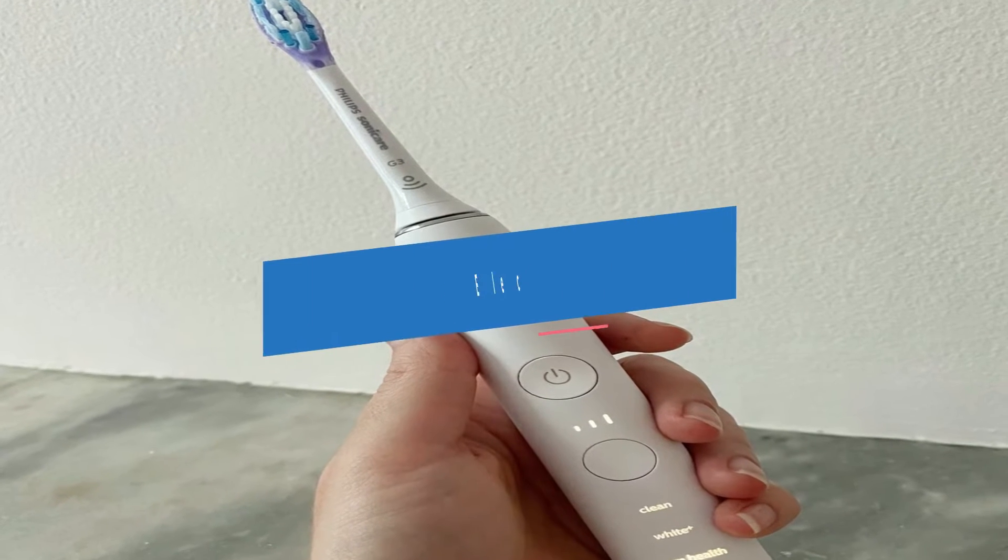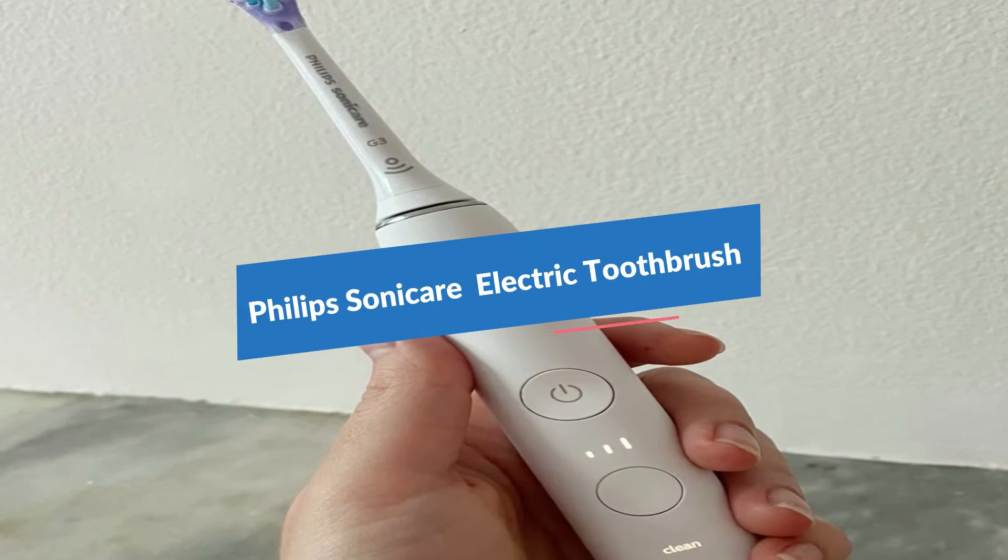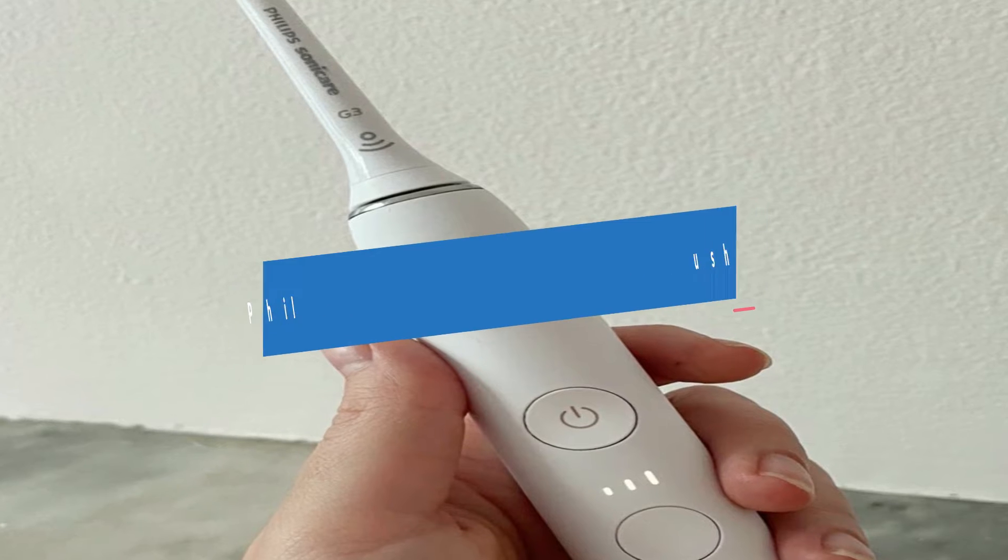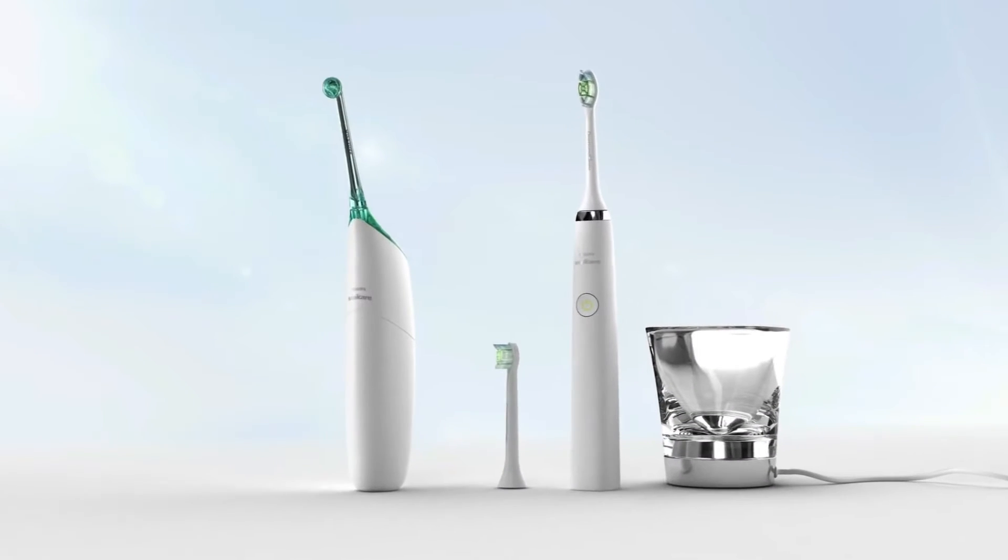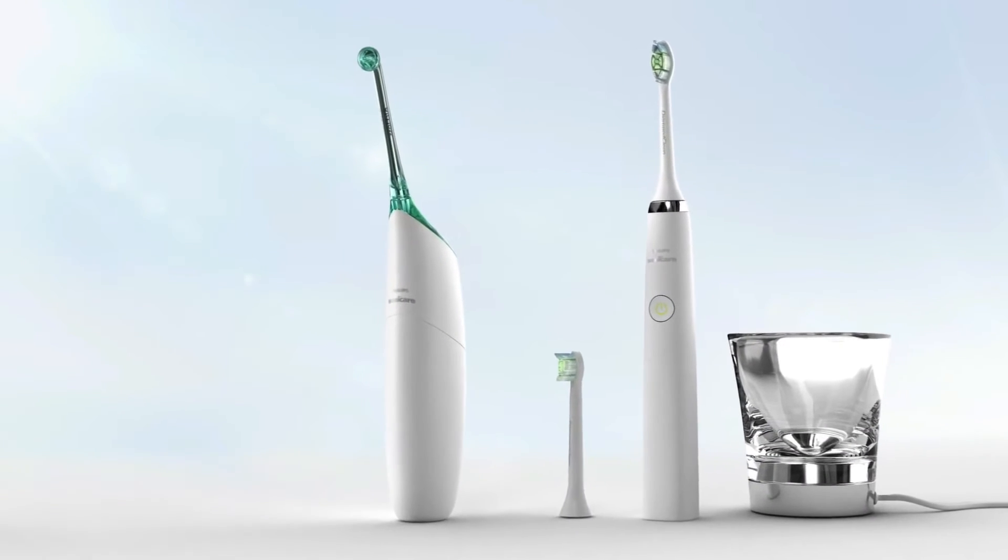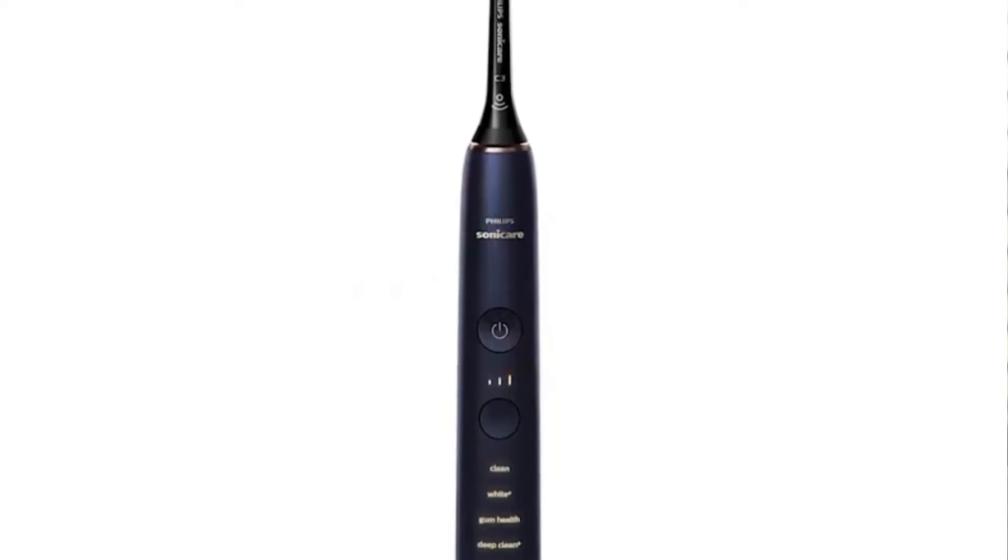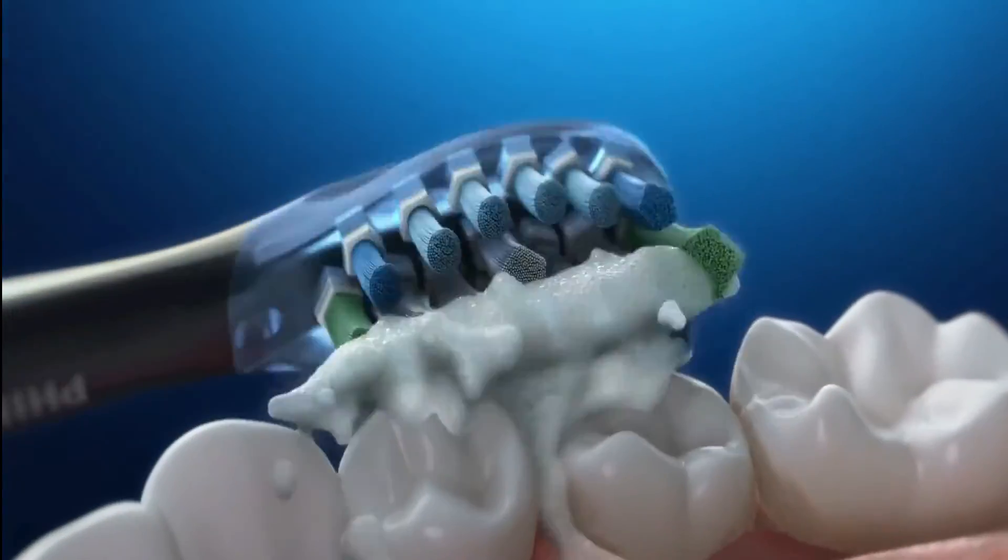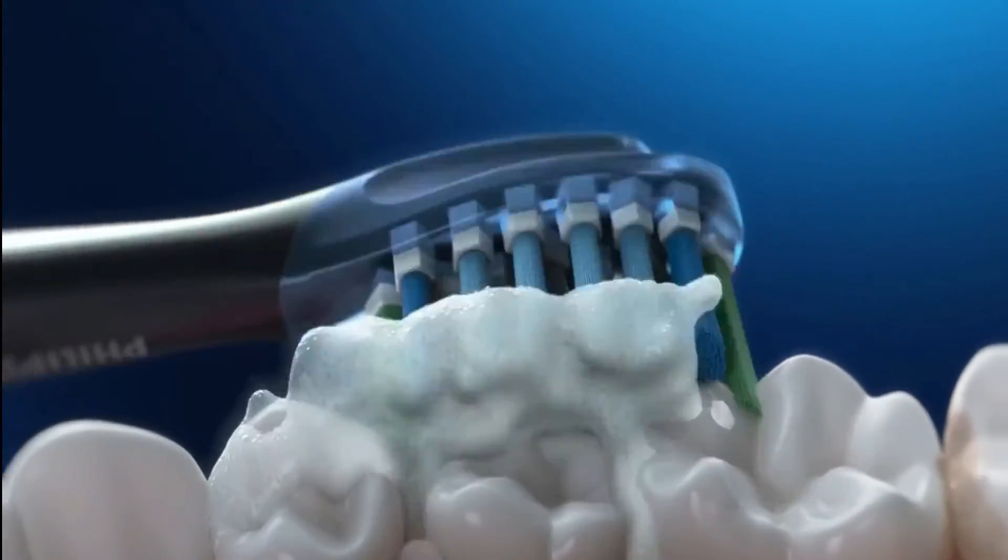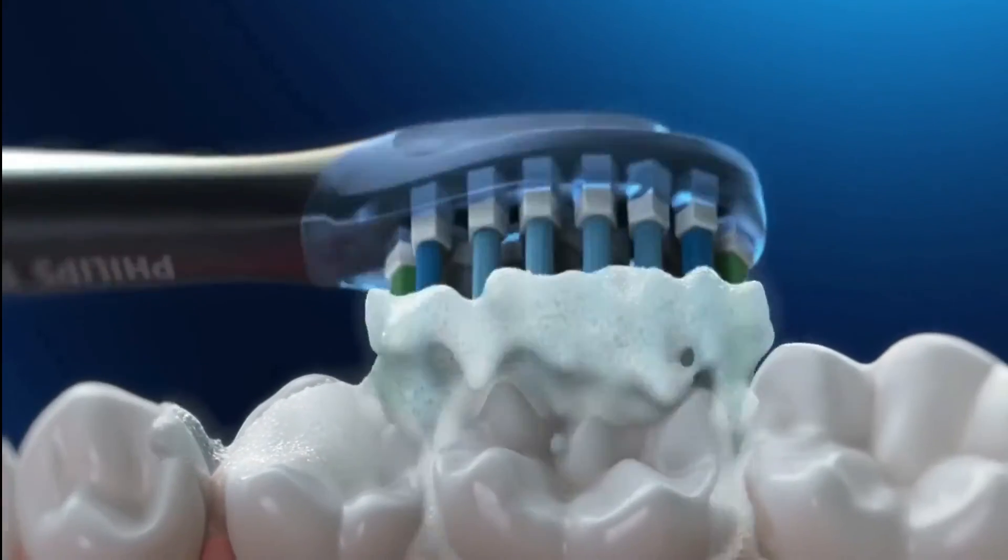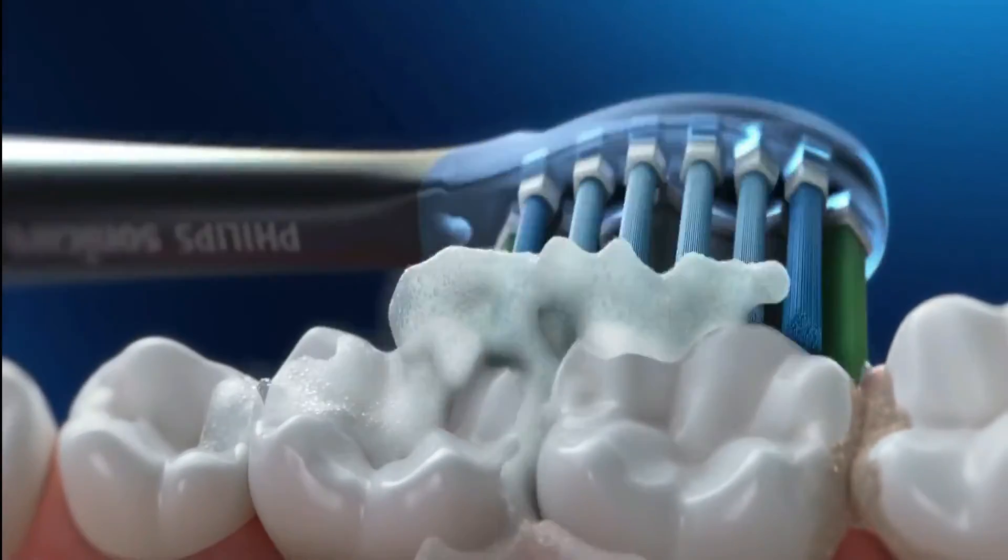The second product on our list is the Philips Sonicare Rechargeable Electric Toothbrush. Diamond Clean Smart provides the most comprehensive and all-encompassing service. It's much more than a toothbrush. With real-time feedback and tailored coaching, you may improve your technique and acquire complete confidence in your dental care. It is a full oral care system, the finest Philips Sonicare has to offer.